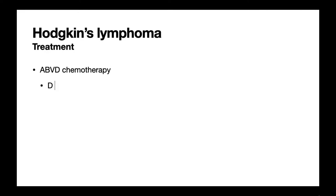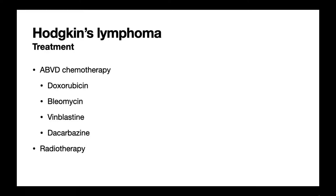When it comes to treating Hodgkin's lymphoma, the key principles are chemotherapy and radiotherapy. The chemotherapy regimen used in the UK is ABVD: doxorubicin, bleomycin, vinblastine, and dacarbazine. Radiotherapy can be used as an adjunct, and supportive care is also important — antipyretics for fever, antiemetics for vomiting, and antibiotics if the patient has an infection.